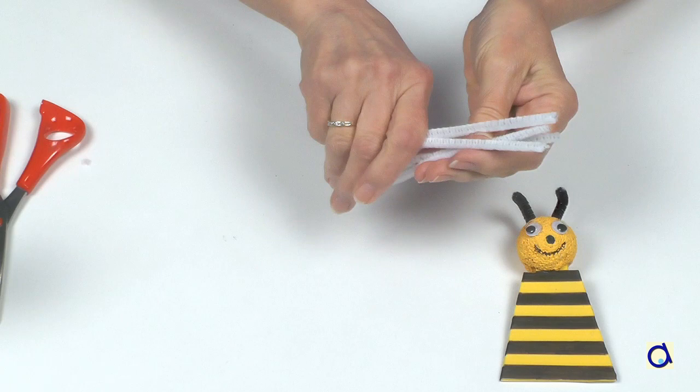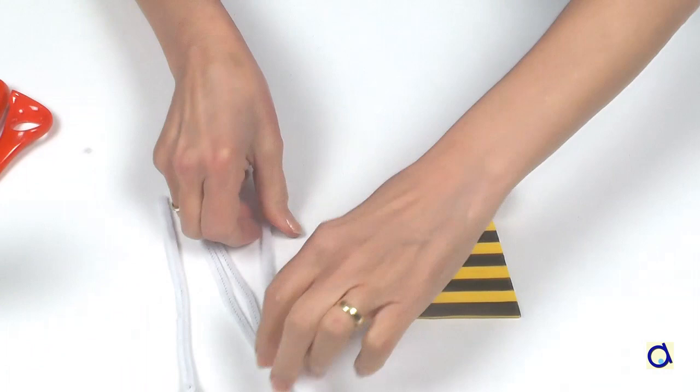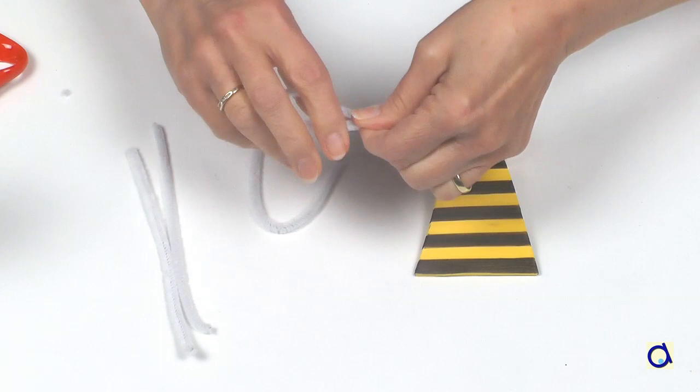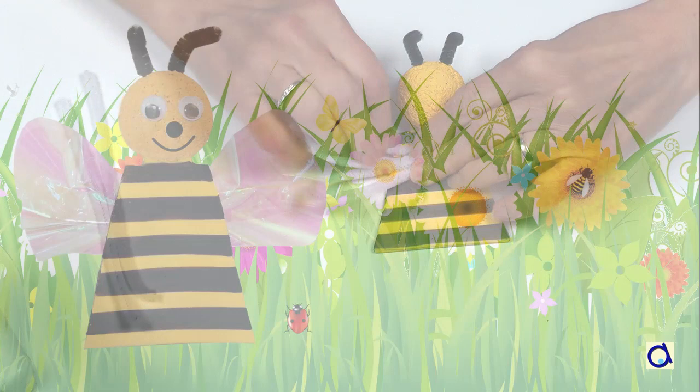Instead of using cellophane, you can represent the wings with white pipe cleaners. Take two pipe cleaners and fold them in half. Cut them. Then fold them into a rounded shape to represent the bee's wings. Glue them to the back of the bee's body with hot glue. Glue two wings on each side of the body.